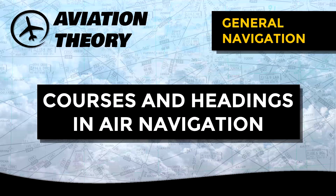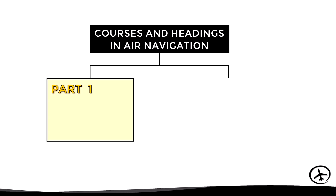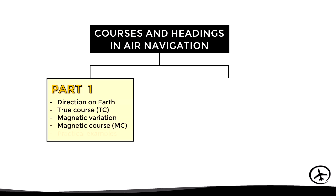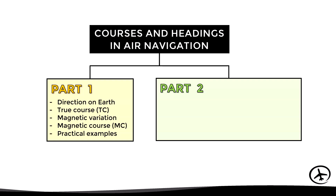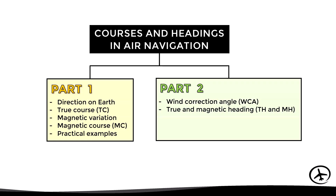Today we will talk about courses and headings in air navigation, Part 2. In the previous video we talked about how direction is measured on earth and saw the concepts of true course, magnetic variation, and magnetic course. In this second part we will look at the wind correction angle, true and magnetic heading, compass deviation, and compass heading, along with some practical examples.